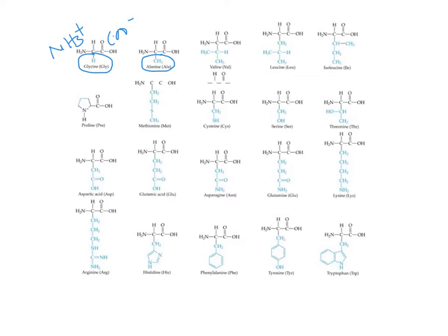The next amino acids are valine, leucine, and isoleucine. If you take a close look at their side chains, all three have branches — that is why they are referred to as branched-chain amino acids. So we have three branched-chain amino acids: valine, leucine, and isoleucine.